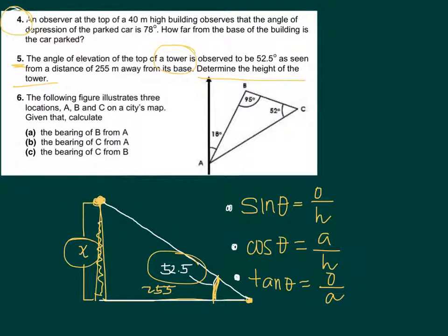And the distance of the observer, 255 meters, is actually the adjacent side of the triangle. So if I have opposite and I have adjacent,